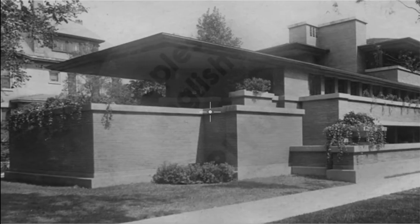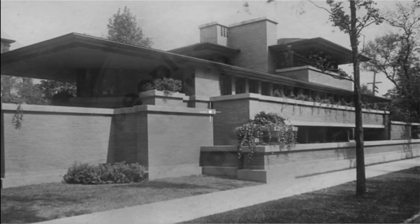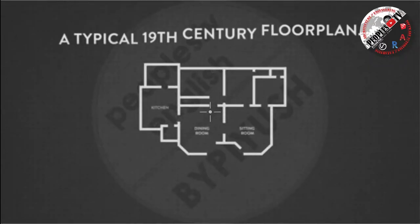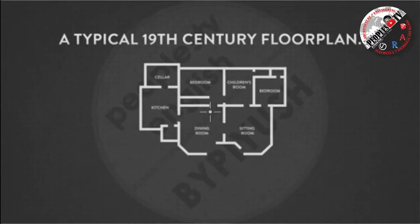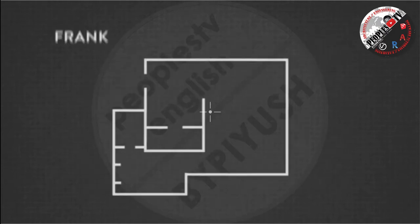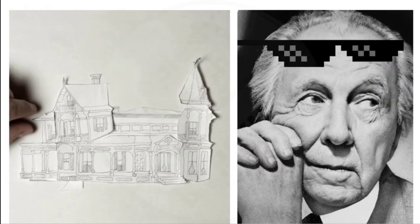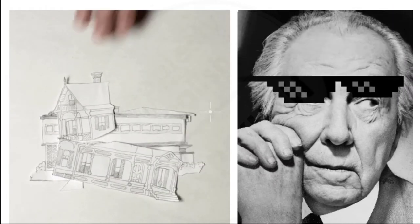Another example comes from America, when we look at the Prairie style pioneered by Frank Lloyd Wright. In its early work, the form and flow of the space shows some parallels with the vernacular language of Japanese architecture. So we can say that Frank Lloyd Wright attempted to take inspiration from the Japanese.